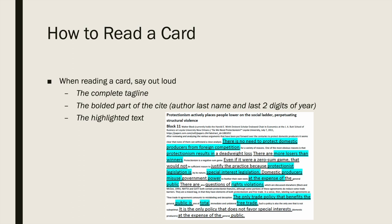As a side note: when you're reading a bunch of cards in a row, it's helpful to put a transitional word between pieces of evidence — like 'and' or 'next' — to make it very clear that you're moving on to the tagline. Otherwise, the end of the quote from a previous card could flow directly into the tagline of the next card, and it's hard to tell you've moved on to new evidence. So after you finish reading a card, pause, say 'and,' pause again, and then start reading the tag of the next card.